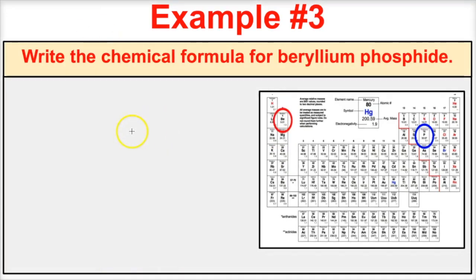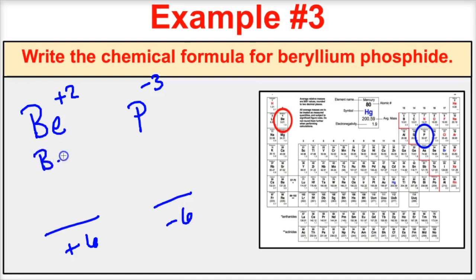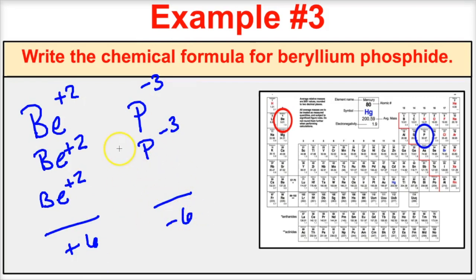Let's write the correct chemical formula for beryllium phosphide. Beryllium is in group 2 and forms positive 2 ions. Phosphide is in group 15 and forms negative 3 ions. The lowest common multiple of 2 and 3 is 6, so I need 3 berylliums to get a total charge of positive 6, and 2 phosphides to get a total charge of negative 6. These add up to zero, so the correct chemical formula is Be₃P₂.